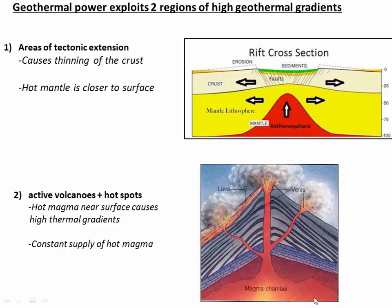A second area is active volcanoes or hot spots. Here we've literally got hot magma that's been able to make its way up to the surface through a plumbing network. By virtue of having that liquid hot magma very close to the surface, we get high thermal gradients and a lot of heat flux. So volcanoes are another common place to make geothermal energy.